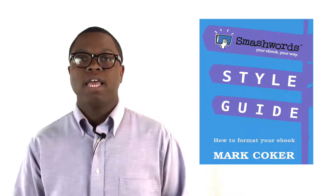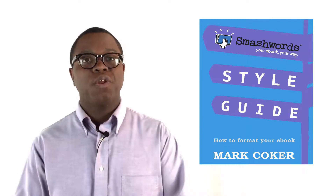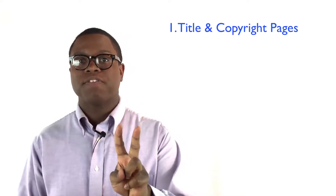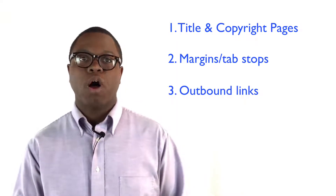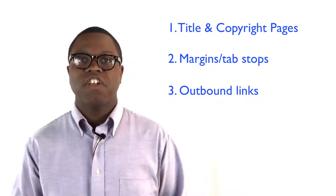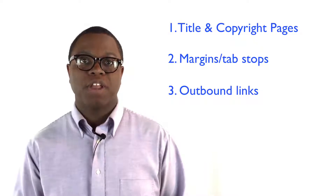Smashwords came up with a solution to help authors with this problem, and it's called the Smashwords Formatting Guide. It's approximately 100 pages long, and I've read it, but I'm pretty sure that you don't have that kind of time. You only need to focus on three things in order to get your book accepted at Smashwords: your title and copyright page, your margins and tab stops, and your outbound links. By focusing on those three simple things, I've had almost all of my books accepted at Smashwords, just about every time on the first try, and I rarely ever encounter any formatting issues there.